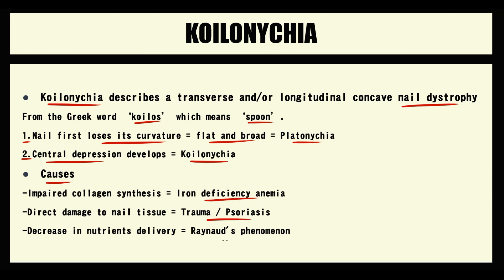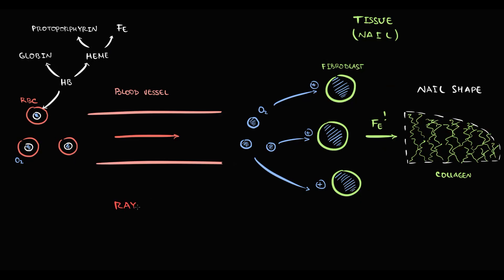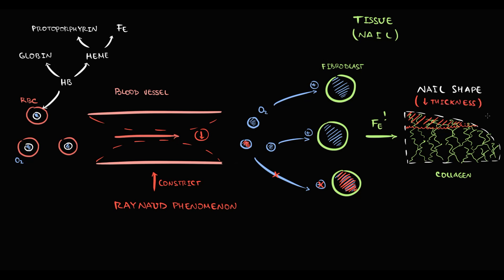The third cause of koilonychia is decreasing blood supply, for example in Raynaud's syndrome. In Raynaud's syndrome, constriction of blood vessels causes decreasing blood flow, and thereby causes decreasing oxygen delivery to the tissues. With decreasing oxygen delivery, the production capacity of fibroblasts decreases. As a result, fibroblasts begin to produce less collagen, nails become thinner, and these thin nails we call koilonychia.